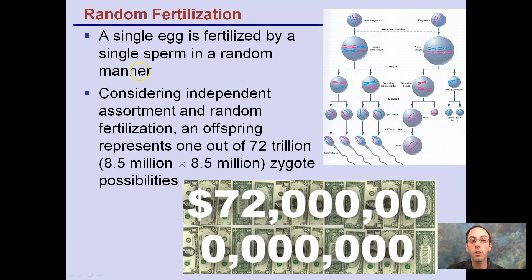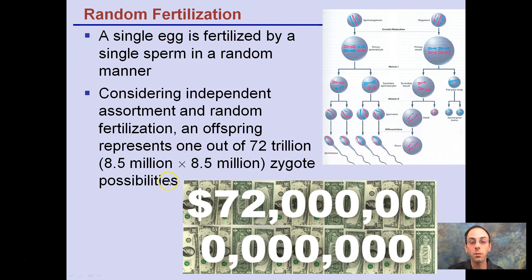Random fertilization occurs — a single egg fertilized by a single sperm. Considering independent assortment and random fertilization, an offspring represents 1 out of 72 trillion zygote possibilities. There are about 8.5 million different ways to make a different sperm and 8.5 million different ways to make an egg, so 8.5 million times 8.5 million gives you 72 trillion zygote possibilities.